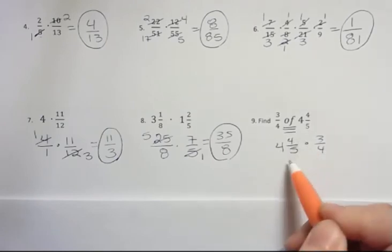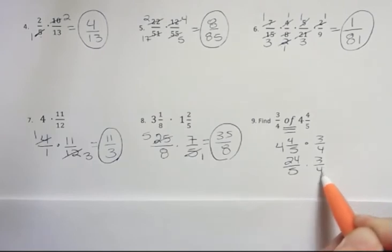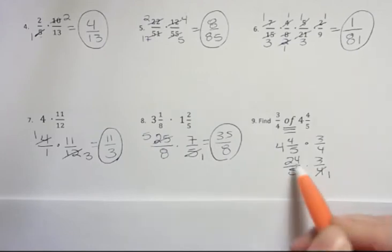4 times 5 is 20, plus 4 is 24, and then 3/4. I can cancel the 4. It goes into itself once, and it goes into 24 six times.